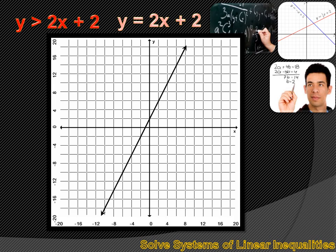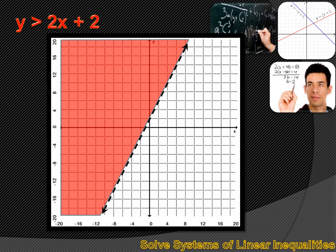That's our boundary line for the inequality y is greater than 2x plus 2. But do we want to leave it as a line? Because when we leave it as a line, that says that every point that falls on that line satisfies the inequality. But the inequality says we only want answers that are greater than 2x plus 2, not equal to 2x plus 2. So we need to change that line to a dotted line. Now all we have to do is figure out whether we shade above that line or below that line. We're looking for a solution set that includes y values that are greater than 2x plus 2, so we're going to want to shade above that boundary line.